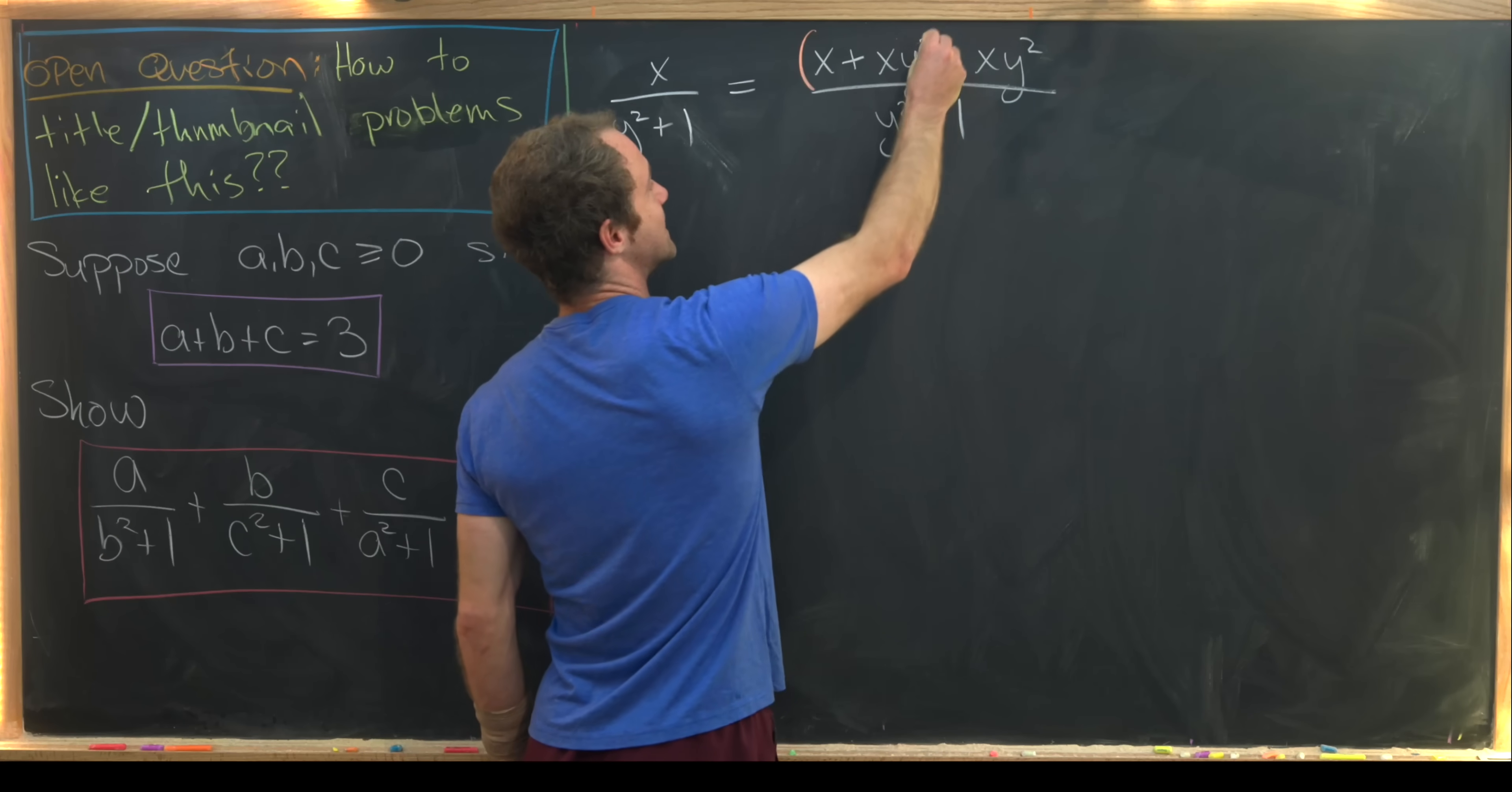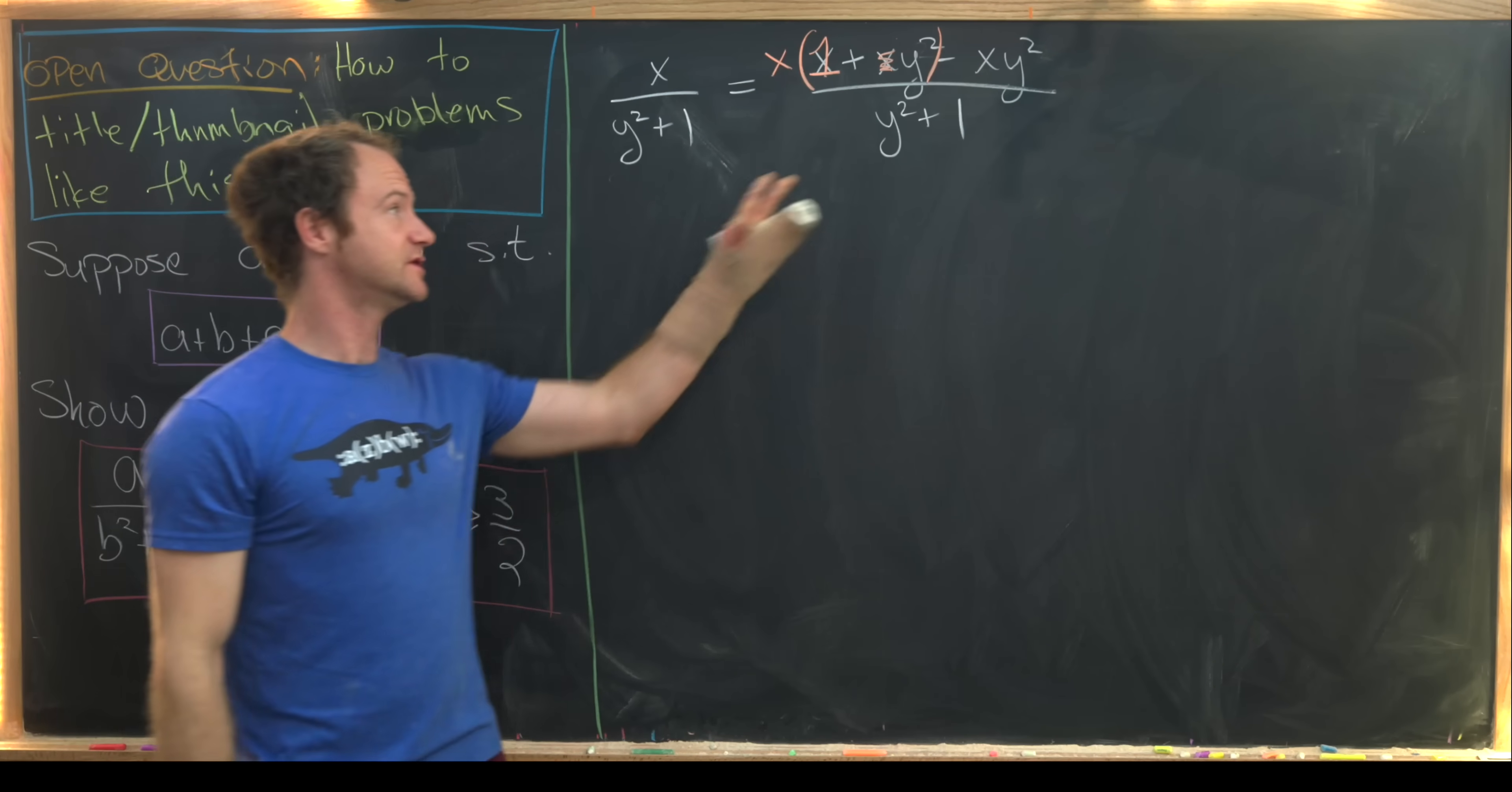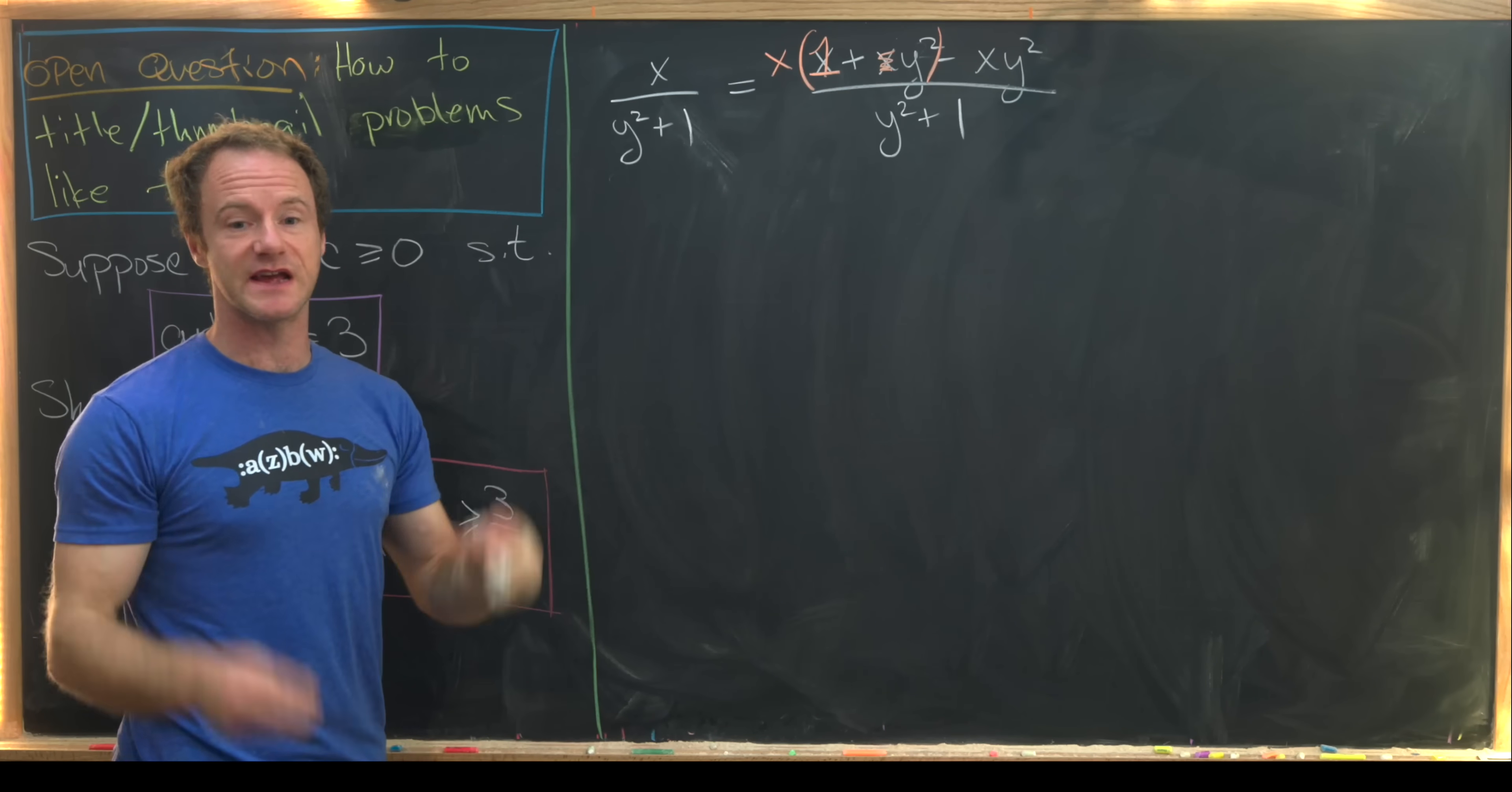Well, that's because we can take an x out of these first two terms and then we've got 1 plus y squared. That's good news because after separating the fraction, that will cancel what's going on in the denominator, leaving us a free x.